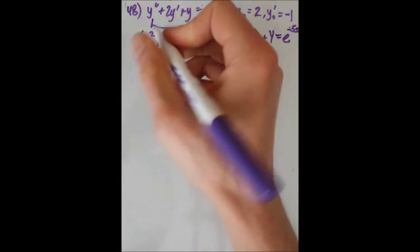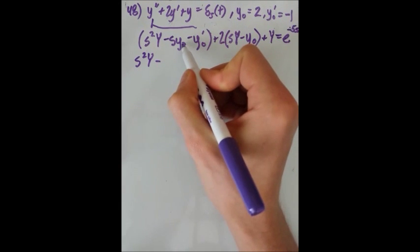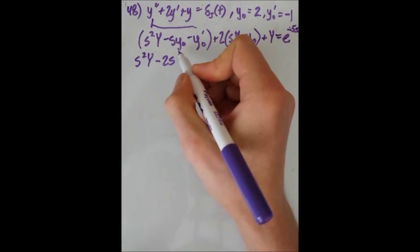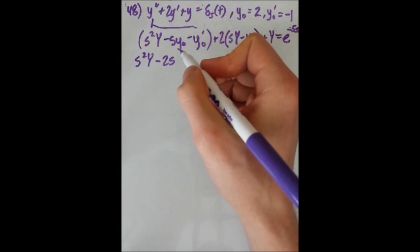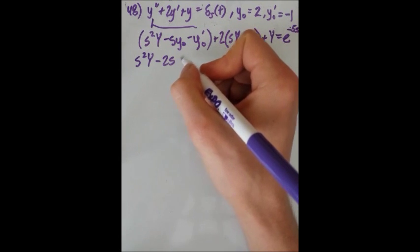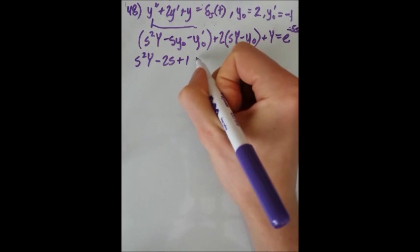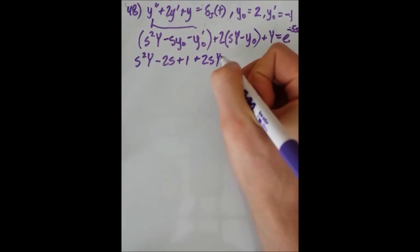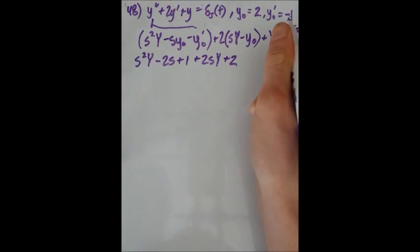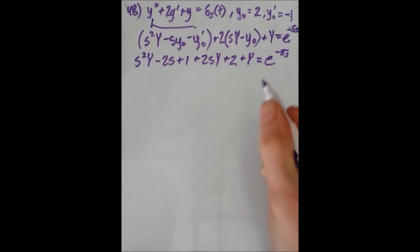Next we expand and collect terms. We know y₀ equals 2, so we plug that in to get 2s — this is why you need initial conditions for the Laplace transform, since it's representable by an integral expression and you need the bounds. y'₀ is negative 1, so minus negative 1 is plus 1. Distributing the 2 gives plus 2sY, and then plus 2, because it's minus 2 times y'₀ which is negative 1. That equals e to the minus 5s.